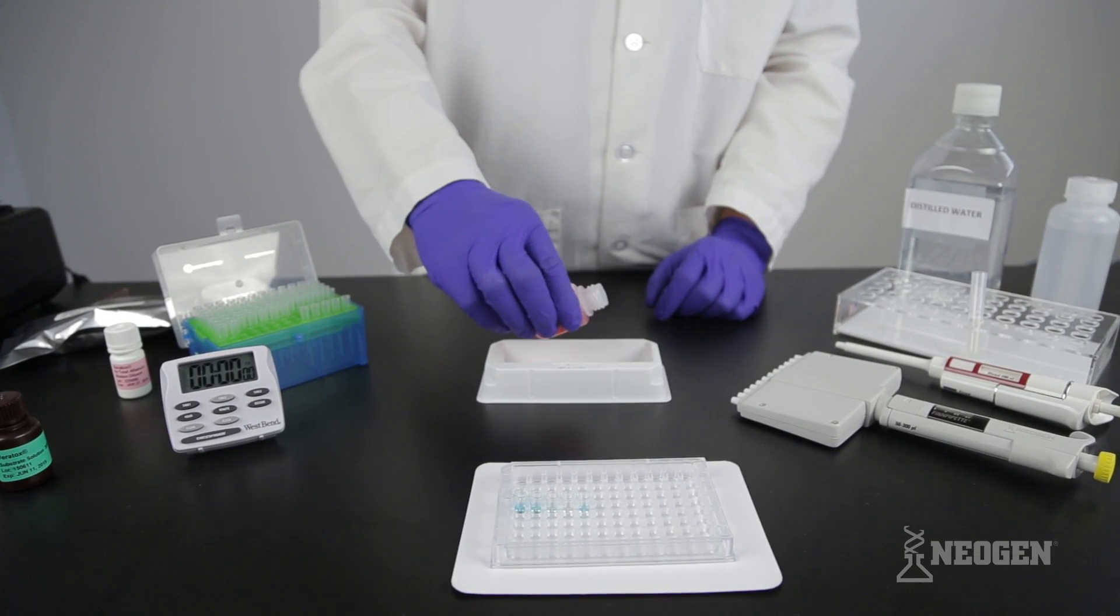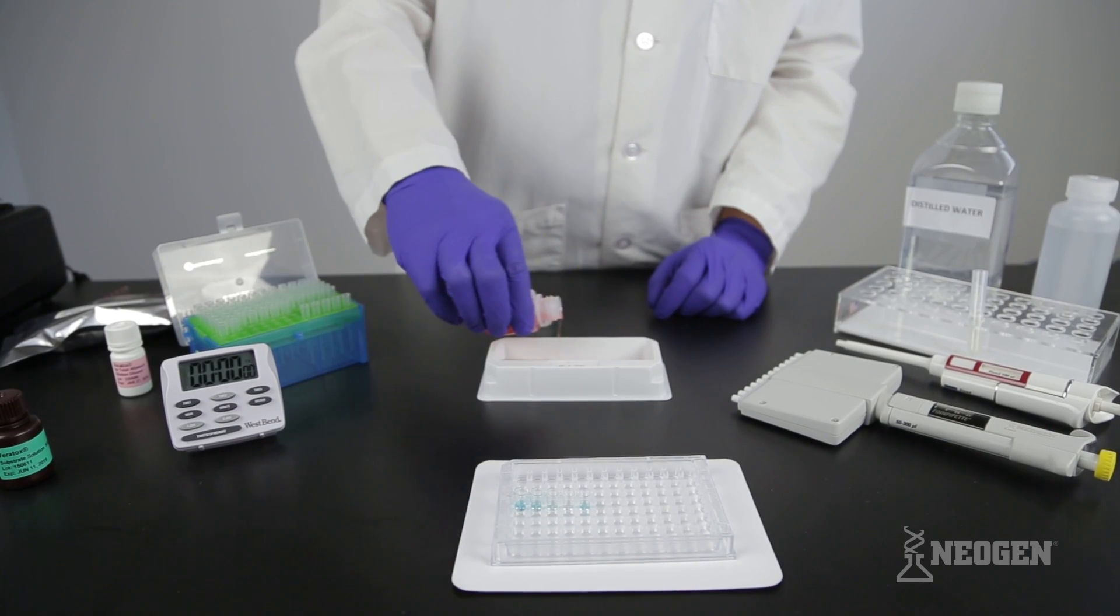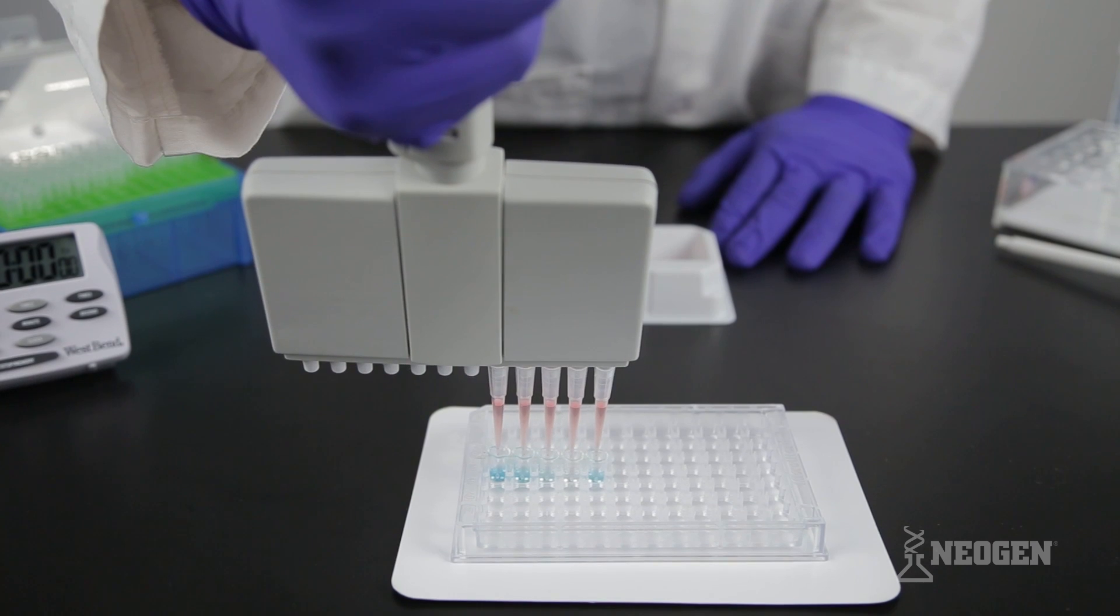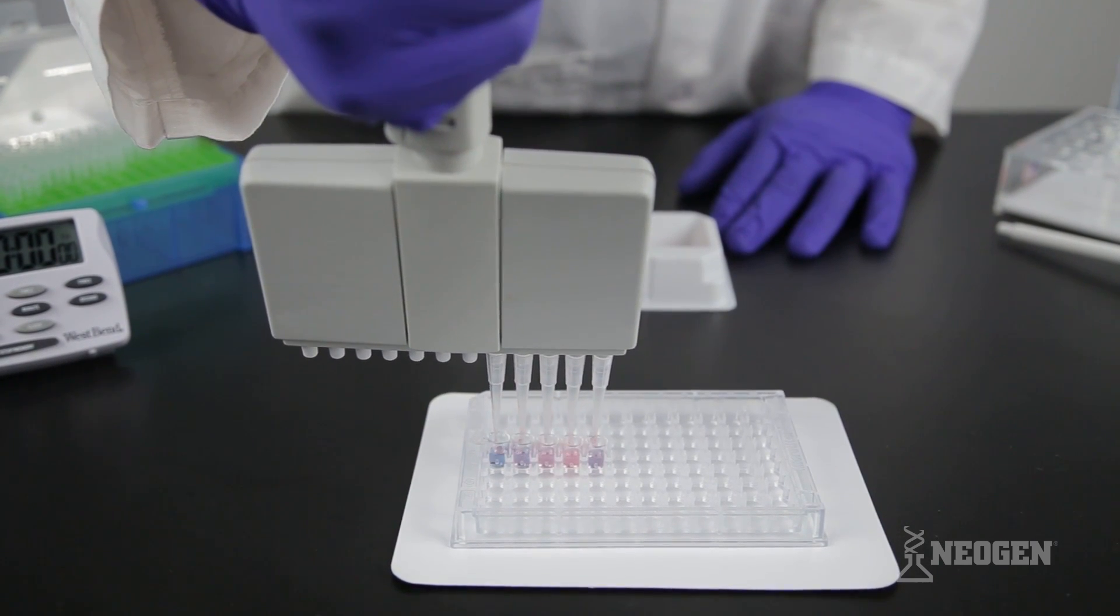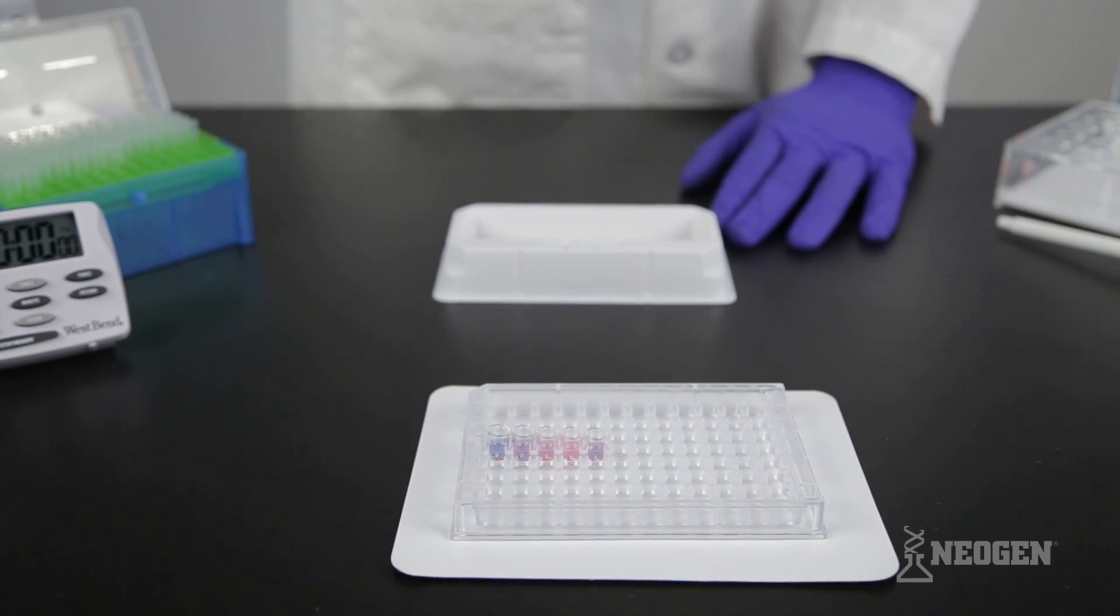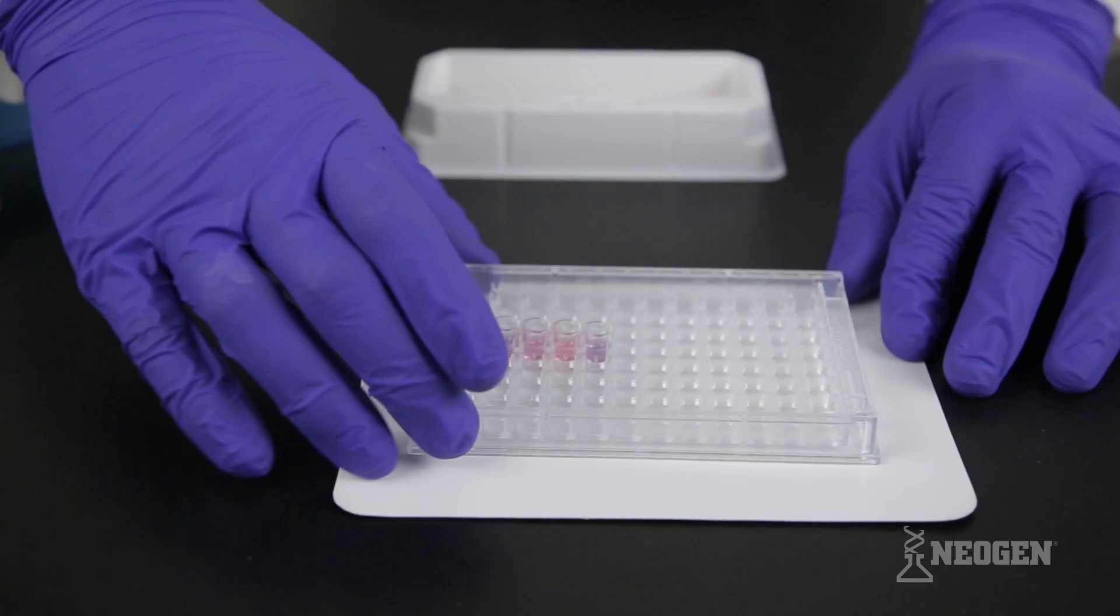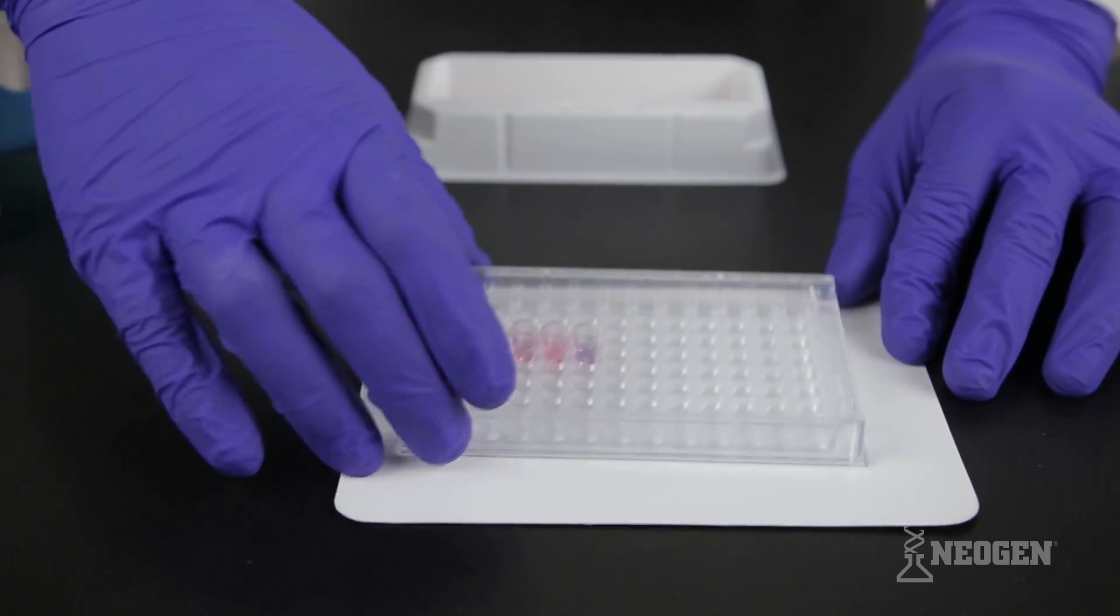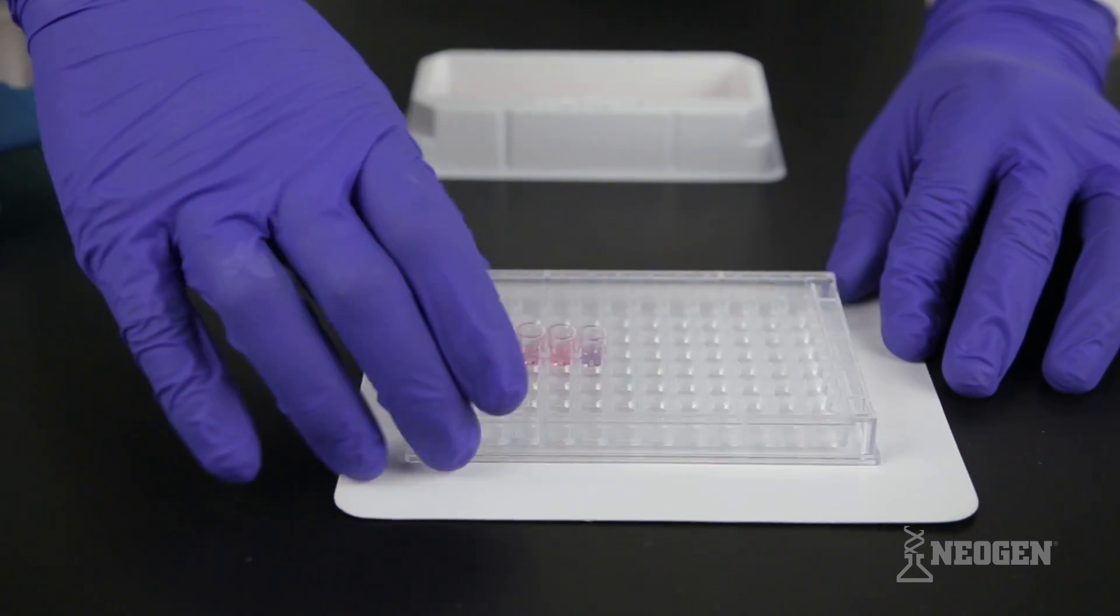Pour the needed volume of red stop from the red labeled bottle into a clean reagent boat. At the end of five minute incubation, add 100 microliters of red stop to the clear wells. This stops the reaction and ends the test. Mix by gently sliding the well holder back and forth. Ensure the liquid is homogenous and there is no layering.